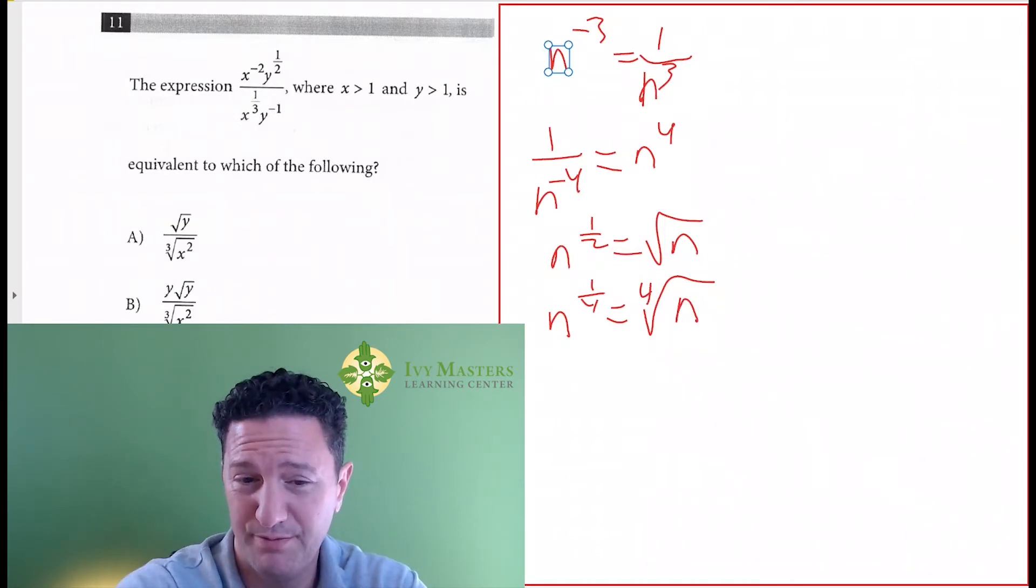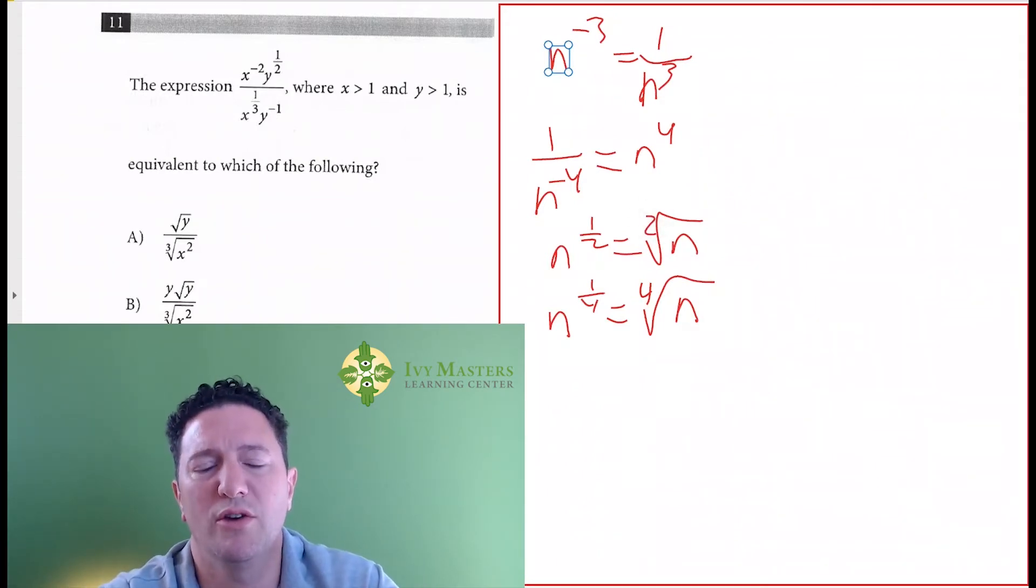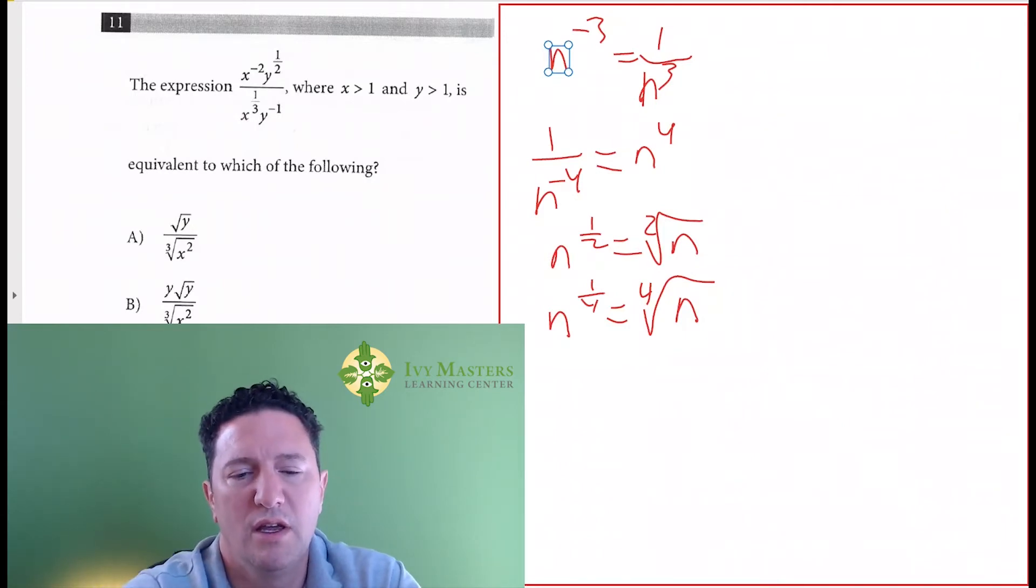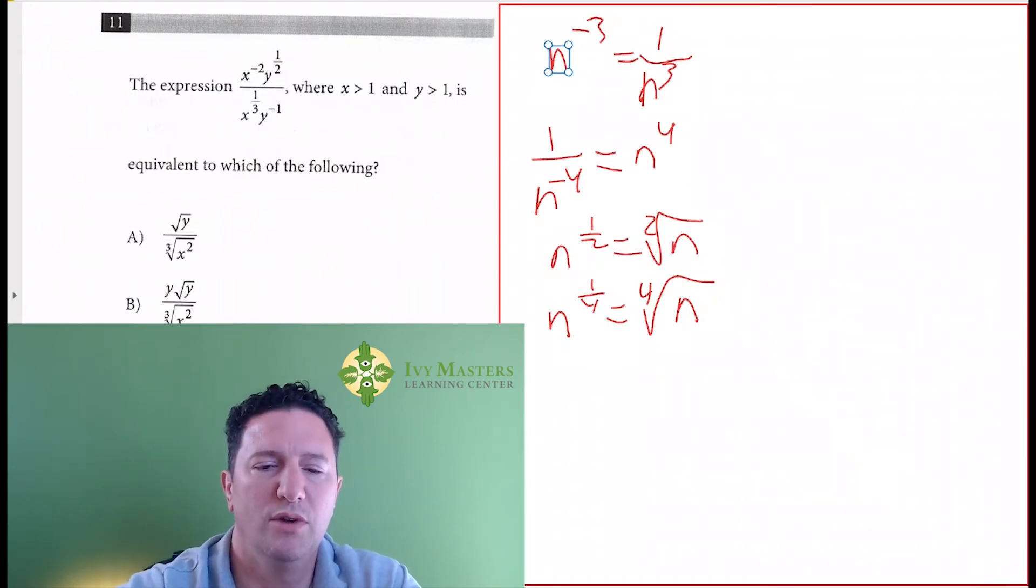Notice, if it's to the 1 half, it's assumed it's a square root. Square root assumes that you have a 2 there. In other words, what times itself will give you n. And if it's n to the 1 fourth, the fourth root of n, what times itself four times will give you n.